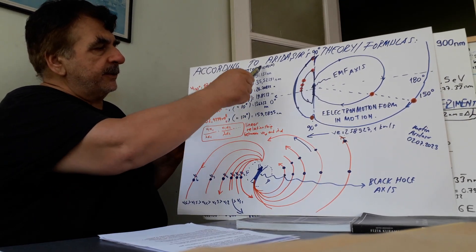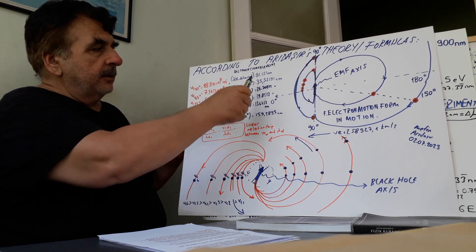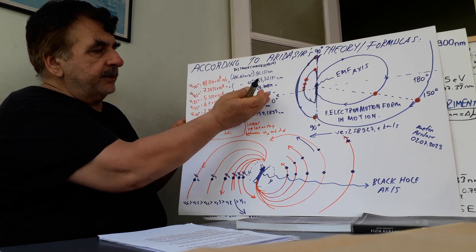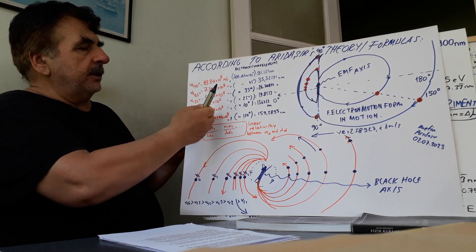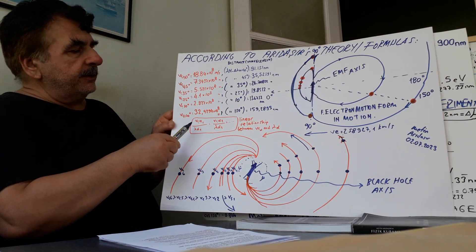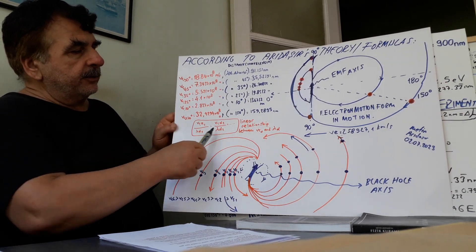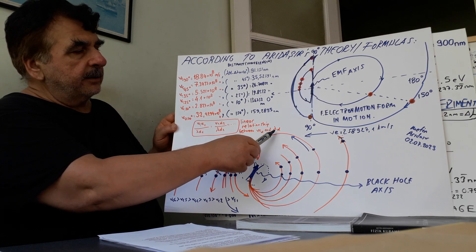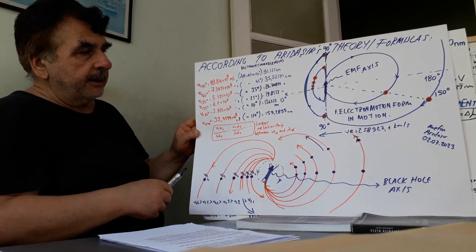As distance decreases, velocity decreases. This is a linear relationship between linear velocity alpha and wavelength alpha.